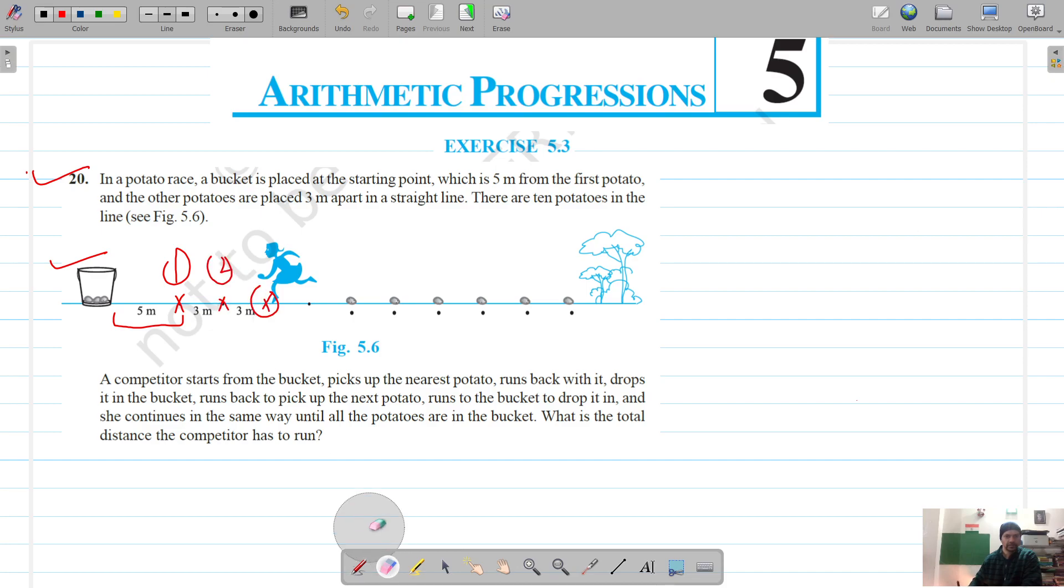This is the third one and it goes on like this. A bucket is placed at the starting point which is 5 meters from the first potato. The distance between the first and second potato is 3 meters, and it goes on like this.